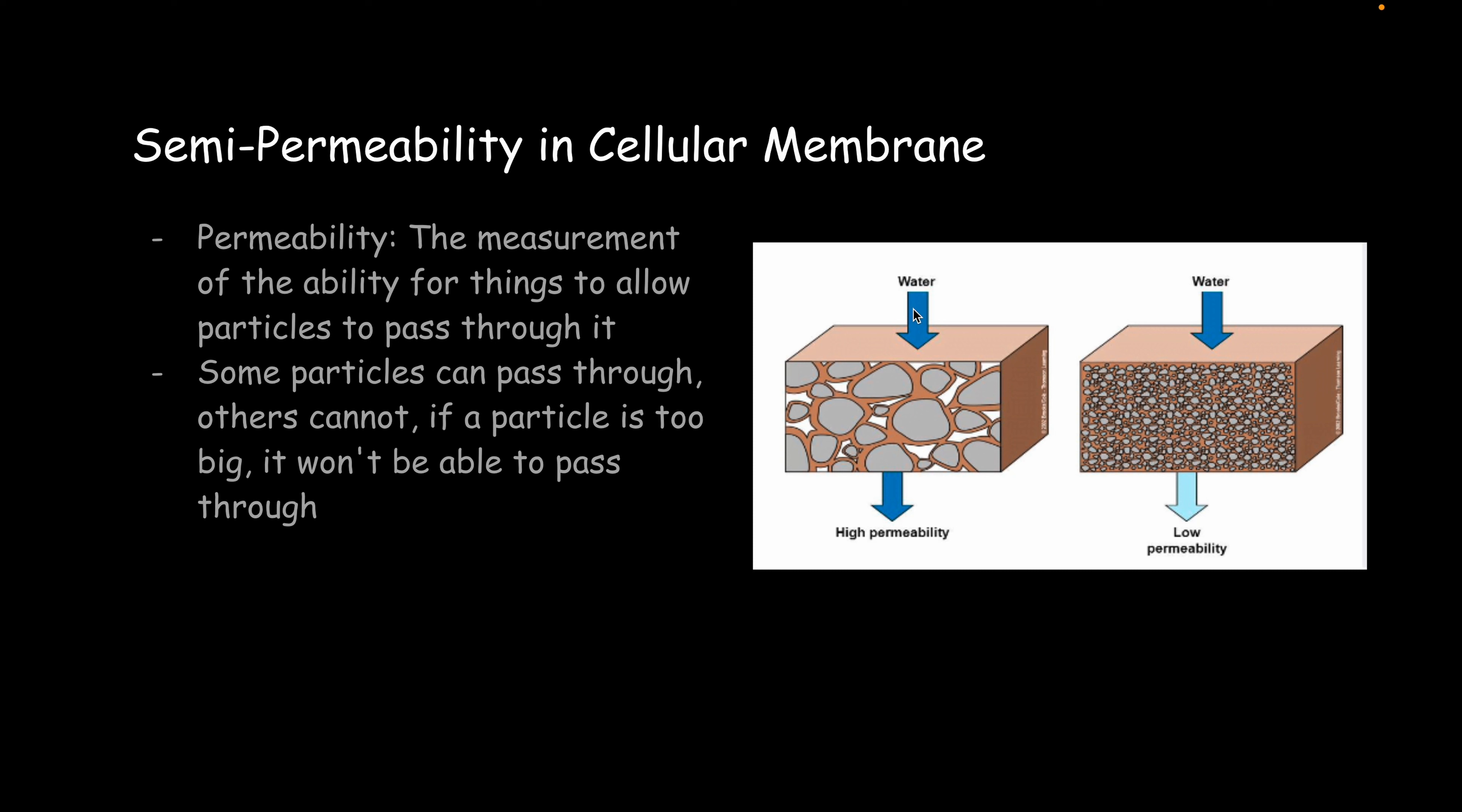And in this diagram here, you can kind of see that example. You're going to have high permeability here because you have a lot of cracks. Water is going to be able to go through here very fast. But low permeability, you can see it's so tightly packed, basically no water is getting through there.